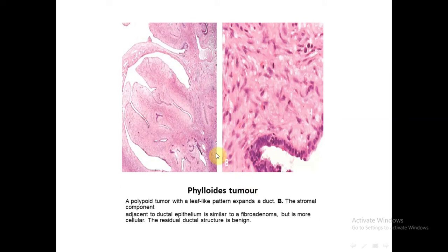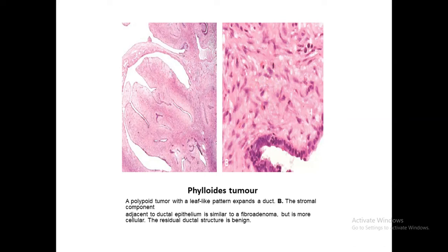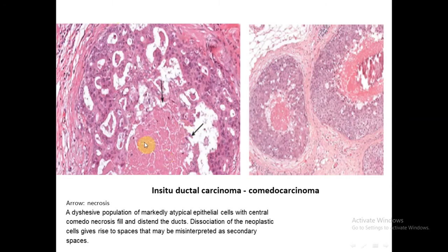This is the phyllodes tumor. It originates from the stroma of the breast and not from the epithelial part. It shows two components: the epithelial glands, which are the least dominant component, and the stromal mesenchymal or spindle cell component. Here we have a leaf-like appearance. The glands are benign, but the stroma is assessed on certain points to determine if this is benign, borderline, or malignant phyllodes tumor, depending on cellular features, presence of atypia, presence of mitosis, and presence of necrosis.